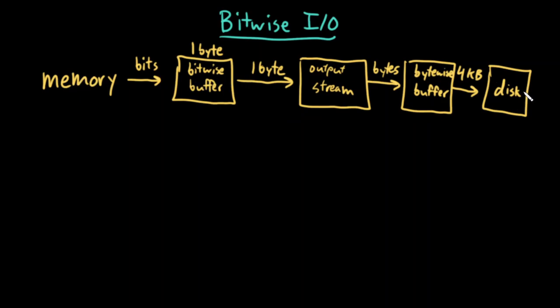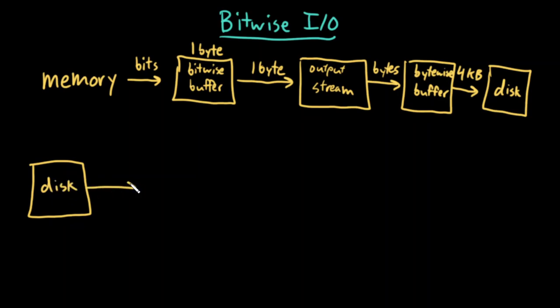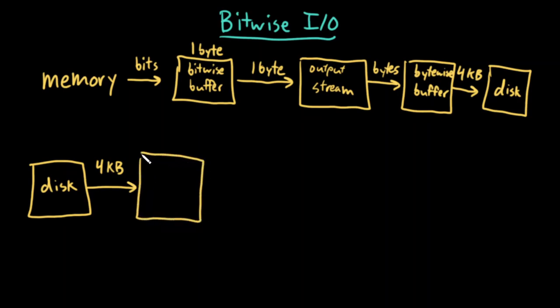What if I want to read from disk? Similarly, I have some file on disk. I can't read a single bit at a time, and I don't want to read a single byte at a time because that would be super slow. So instead, I read a large chunk from the disk to minimize how many disk reads I have to do.